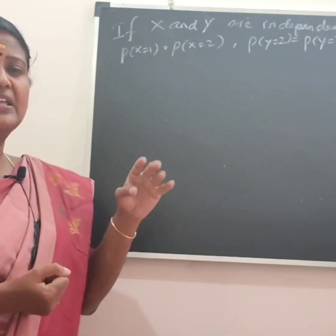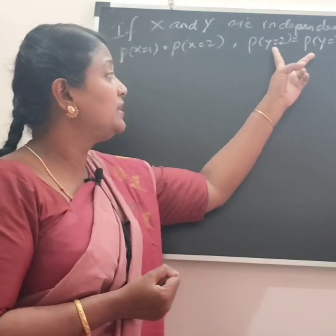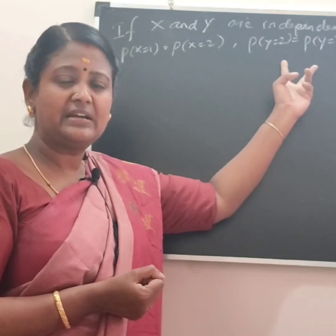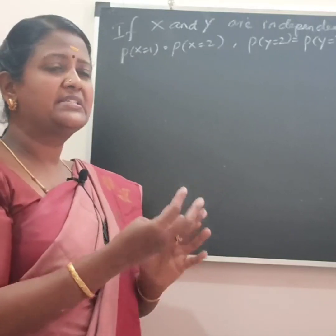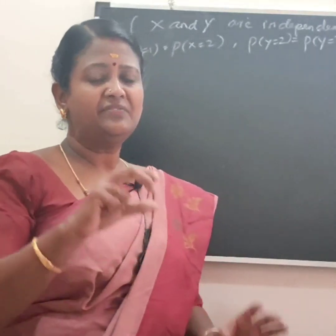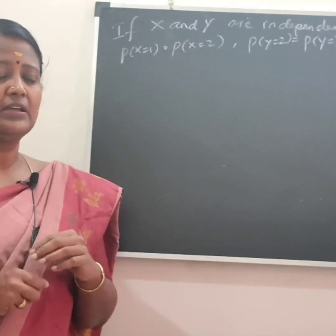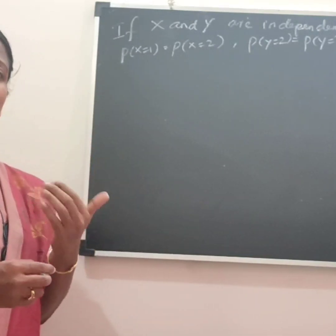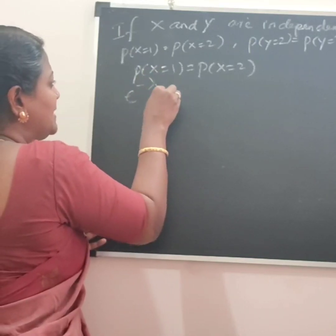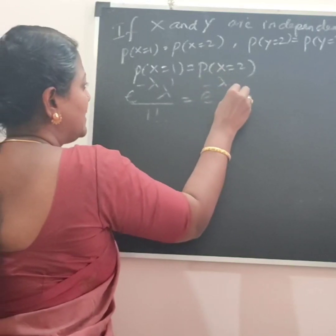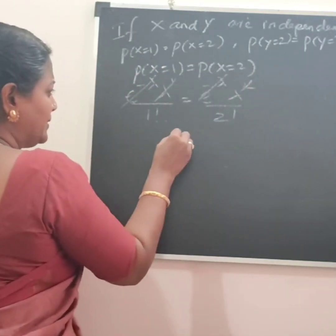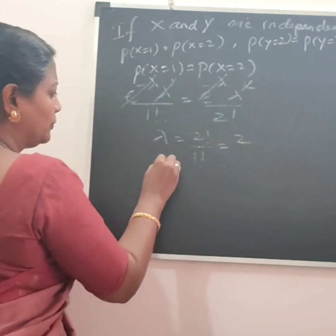Using the condition P(X=1) = P(X=2): e to the power minus lambda times lambda to the power 1 divided by 1 factorial equals e to the power minus lambda times lambda squared divided by 2 factorial. The e to the power minus lambda cancels, and one lambda cancels. So lambda equals 2 factorial divided by 1 factorial, which equals 2. Therefore lambda_x equals 2, meaning the mean of X is 2.